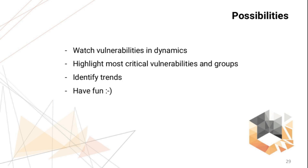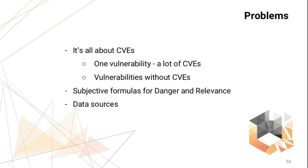So the vulnerability quadrant is a simple and universal way to show the current state for any vulnerability and the dynamics of that state. It's possible to highlight the most critical vulnerabilities and to identify trends. And it's just fun to watch vulnerabilities crawling on the screen. But of course there are some problems and limitations. It's all about CVEs now, and we know that some vulnerabilities may have multiple CVEs, and some may not have a CVE at all — for example, vulnerabilities in SAP products — and they are out of scope right now. Formulas for danger and relevance are very subjective: basically, what factors you choose, such values you will get.